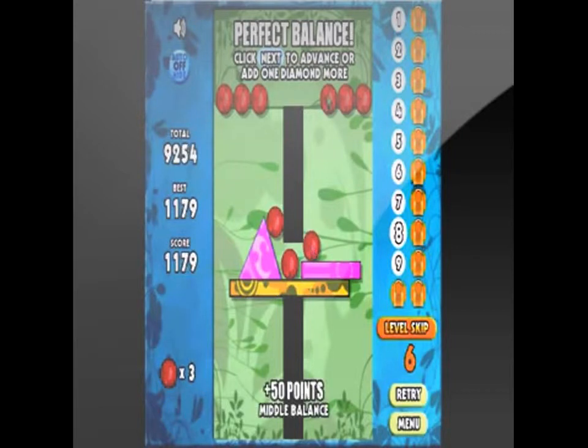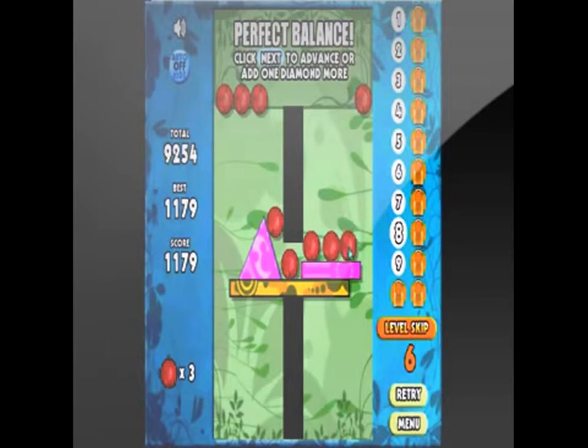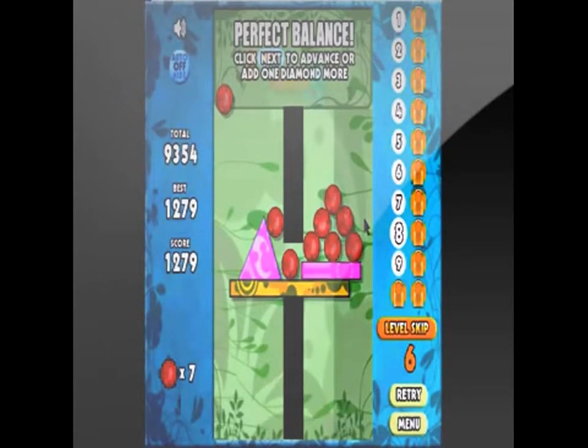One of the cool things though is once you beat a level, you have the opportunity to add up to 9 different circular shaped red diamonds that you can add on and each one you put on gets you 50 extra bonus points which is kinda cool.